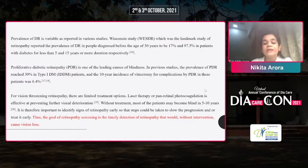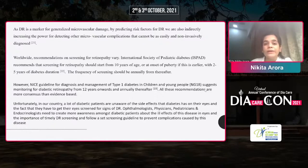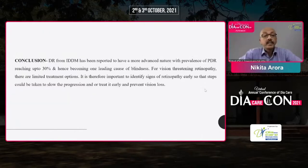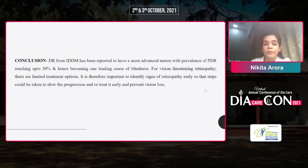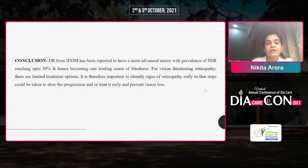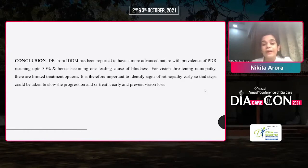In conclusion, diabetic retinopathy from type 1 diabetes has been reported to have a more advanced nature, with prevalence of PDR reaching up to 30%, making it one of the leading causes of blindness. For vision-threatening retinopathy, limited treatment options are available. Therefore, it is important to diagnose it in time so that treatment and medication modification can be started early. Thank you.